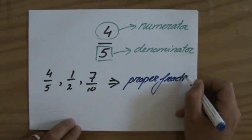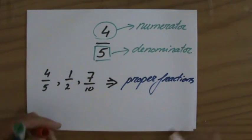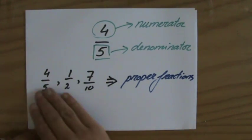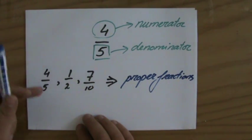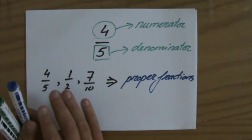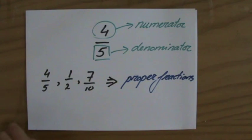Why do we call them proper fractions? Because they are proper, basically they are simplified. It's 4 over 5, there's not a common factor between the numerator and the denominator. I cannot simplify any further. Those are proper fractions.